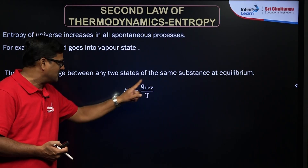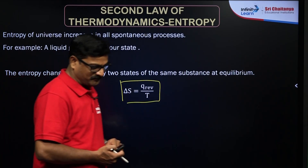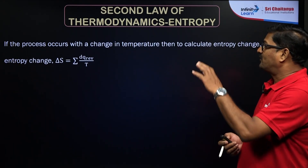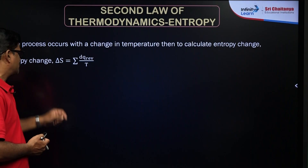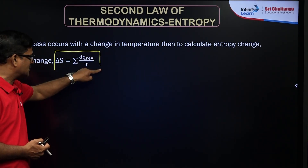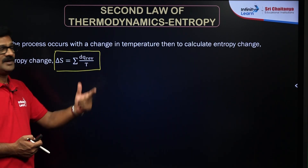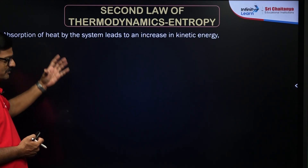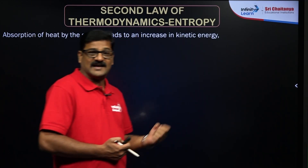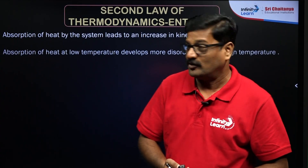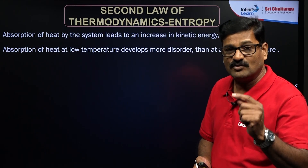The entropy change between two states of the same substance at equilibrium is ΔS = q_reversible / T. If the process occurs with a change in temperature, then ΔS = ∫(dq_reversible / T). Absorption of heat by the system leads to an increase in kinetic energy, which increases entropy. Each of these points can give a single question in theory-based physical chemistry topics.